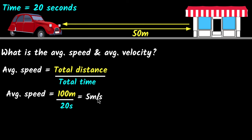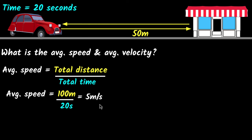Does this mean the car traveled exactly five meters every second? No — we don't know anything about how it actually moved. The meaning is: if the car had traveled at a constant speed, it would be traveling five meters per second. That's the meaning of average speed — assuming constant speed.